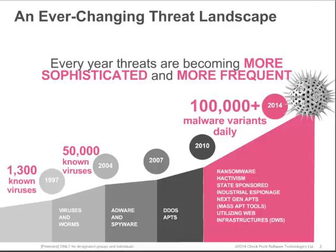From the first self-replicating viruses of the 1980s to the more sophisticated worms and emails that delivered viruses through the 90s, threats have been growing more sophisticated and more intelligent every year. When we hit the 2000s, you had adware, spyware, keyloggers, and distributed denial of service, or DDoS, attacks. Those also dramatically increased, both in frequency and in complexity.